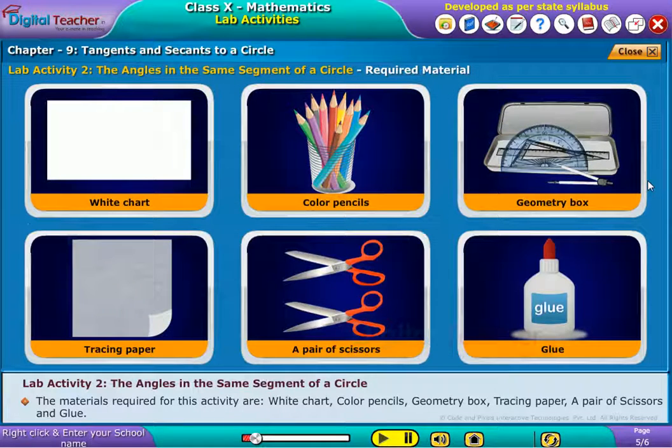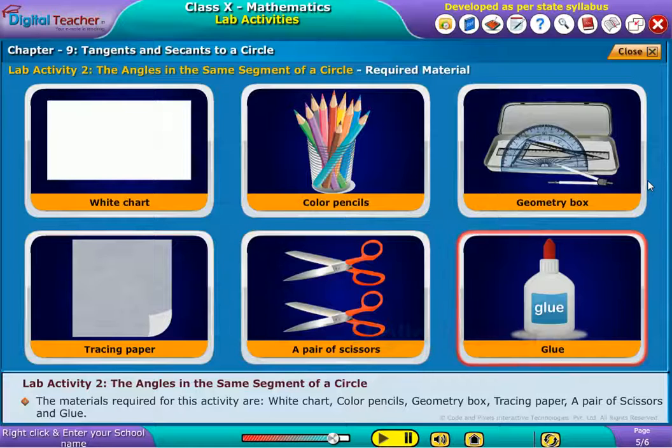The materials required for this activity are white chart, color pencils, geometry box, tracing paper, a pair of scissors and glue.